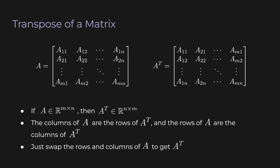First, let's talk about the transpose of a matrix. We've already talked about the transpose of a vector, and for matrices it's similar — we just swap the rows of the matrix with its columns. I've written it out here for an arbitrary matrix A. Take a good look at how the elements move between A and A transpose. The columns of A are the rows of A transpose, and likewise, the rows of A are the columns of A transpose.